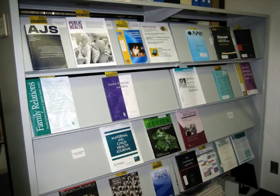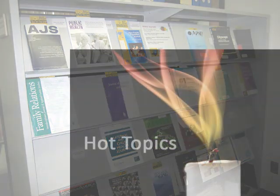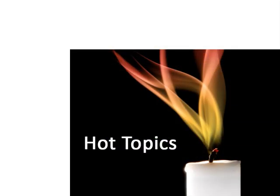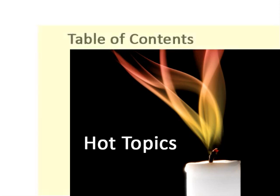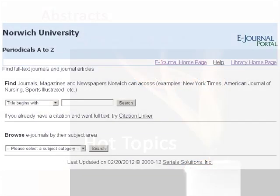Another avenue to explore is current journals in the field. Current journal articles will usually be about hot topics. Reading the table of contents and abstracts from respected journals can help you find topics of interest, and those on which you will likely find more resources. You can locate specific journals available electronically through the library by searching periodicals A to Z.